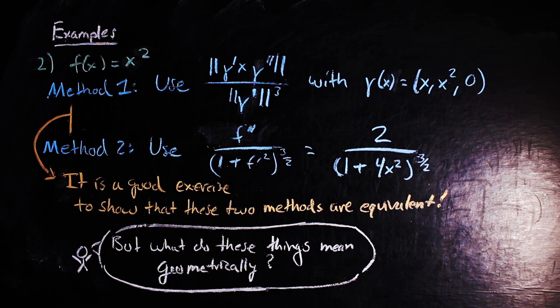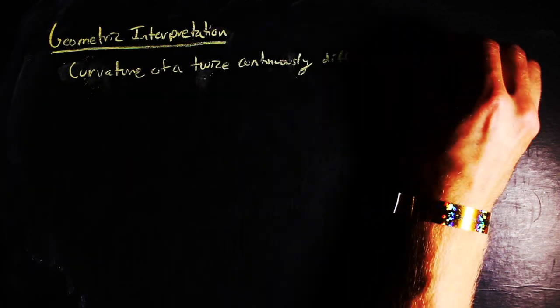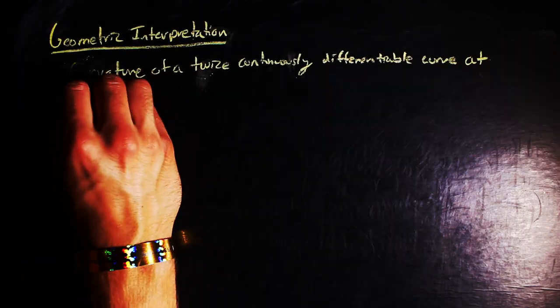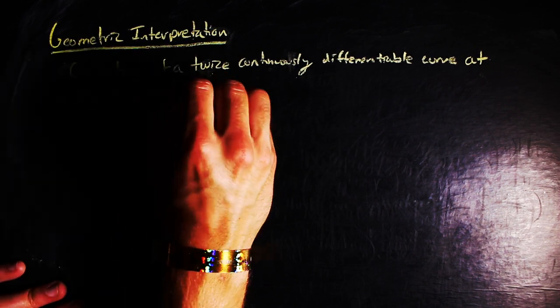Probably the more helpful way to interpret curvature is geometrically. Given some curve that is at least twice continuously differentiable, the curvature at some point on the curve is the reciprocal of the radius of the largest circle that is tangent to the curve and is still bounded by the curve.